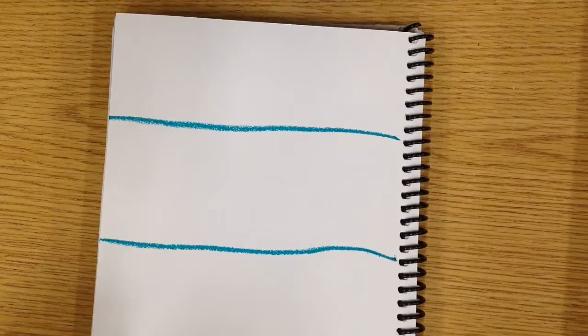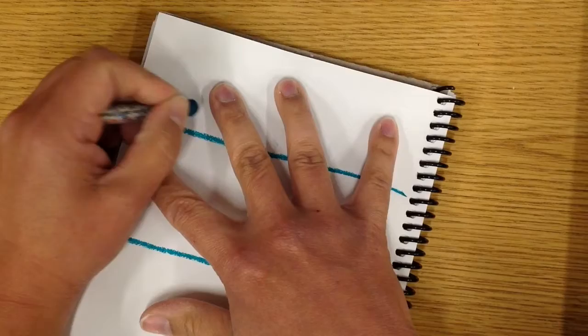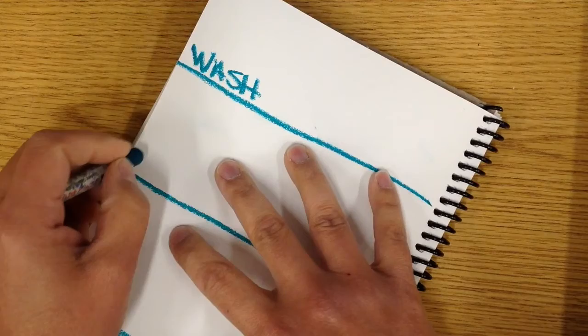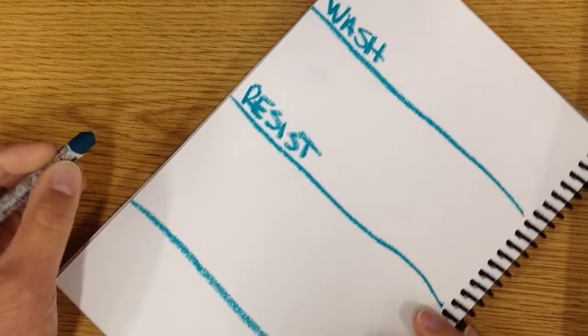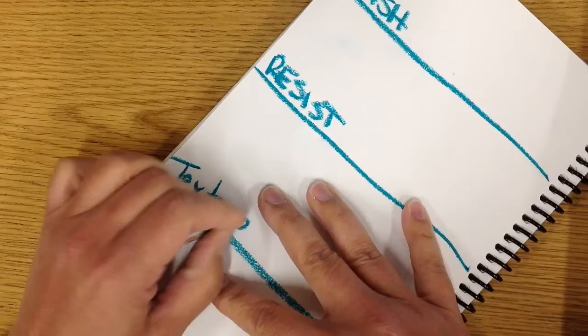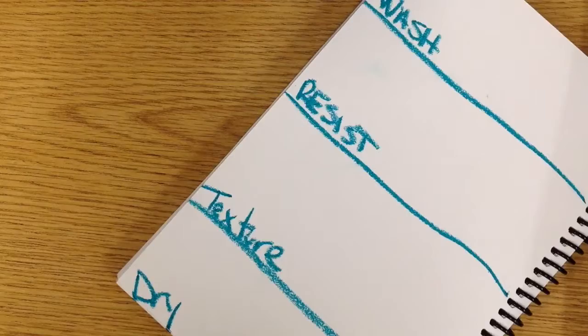I've got four sections. I want to label each of these so I can reference them later if I need to and I can remember the technique. So I'm going to label this one as a wash, I'll label the next one as resist, the third one as texture, and the last one is dry.